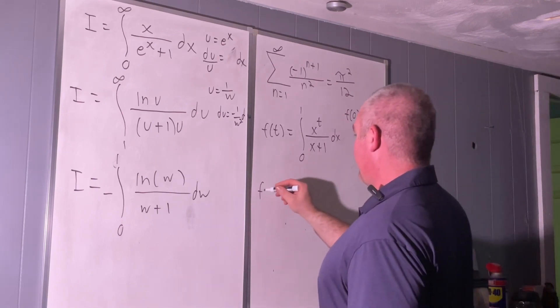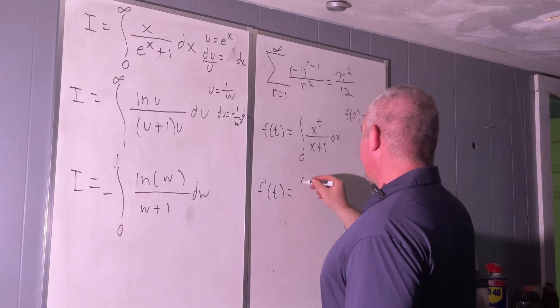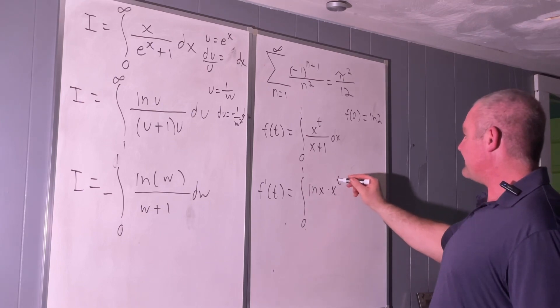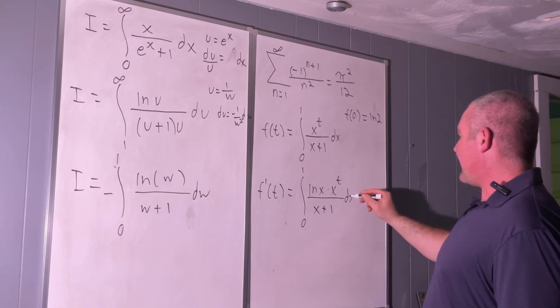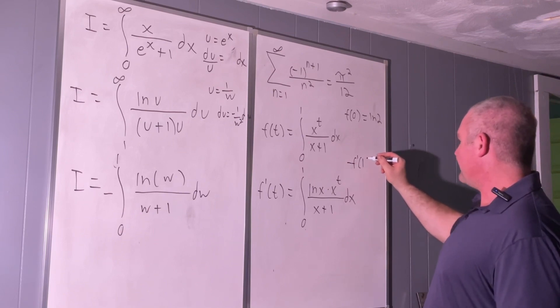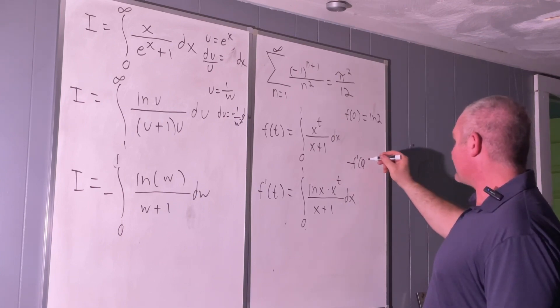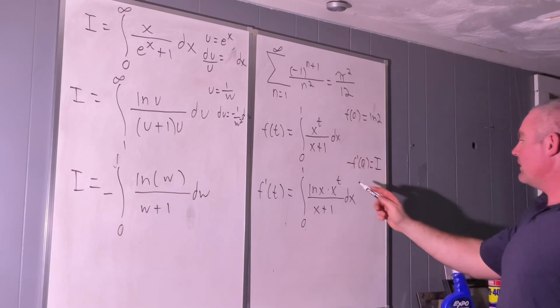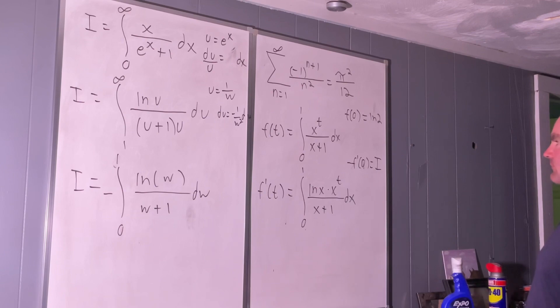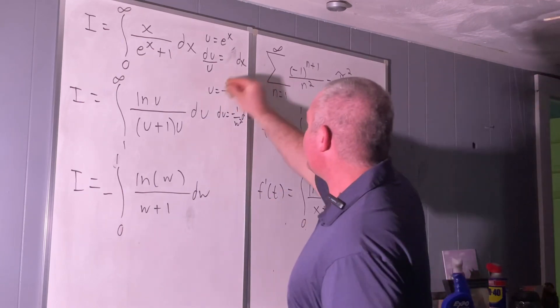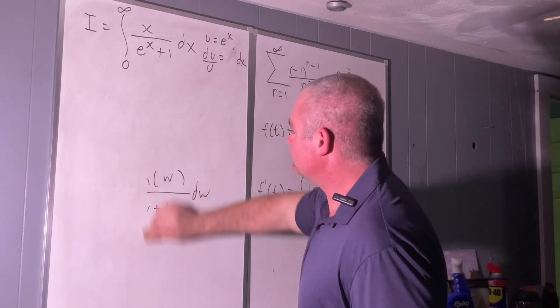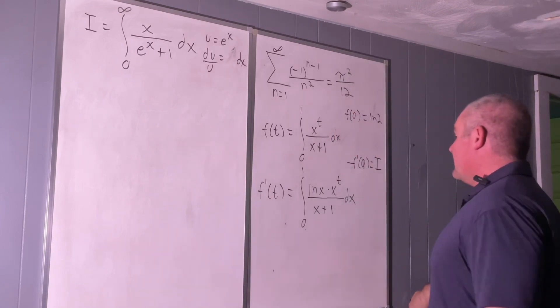All right. So now let's take f prime of t. f prime of t is going to be equal to the integral from zero to one using the Leibniz rule for differentiation under the integral sign. We get natural log of x times x to the t over x plus one dx. All right. Now, if we take negative f prime at zero, we'll get I, right? We plug in zero for t. That becomes x to the zero, which is one multiplied by negative one, and we just get this, which is I. All right. So now we don't need this part. We don't need any of this stuff anymore. So we'll erase it.